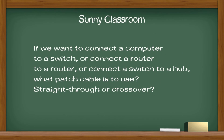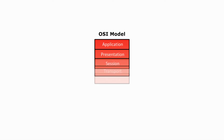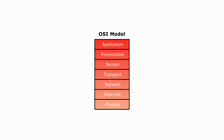If we want to connect a computer to a switch, or connect a router to a router, or connect a switch to a hub, what patch cable is to use — straight-through or crossover? First, let's talk about the OSI model and some common networking devices. A hub belongs to the physical layer, or layer 1.